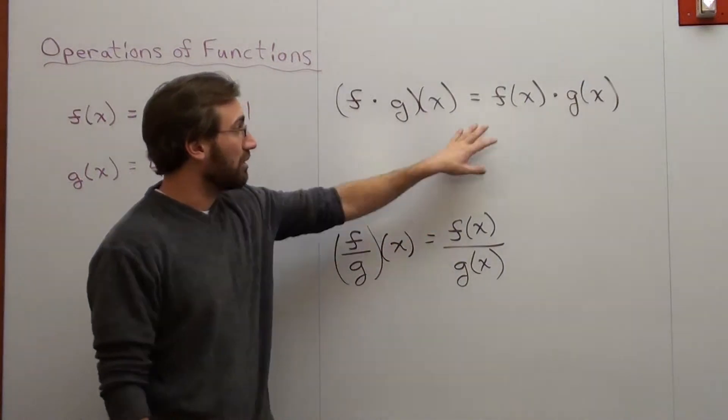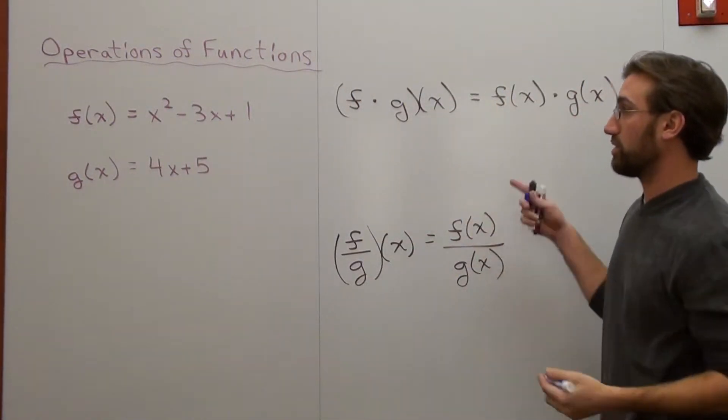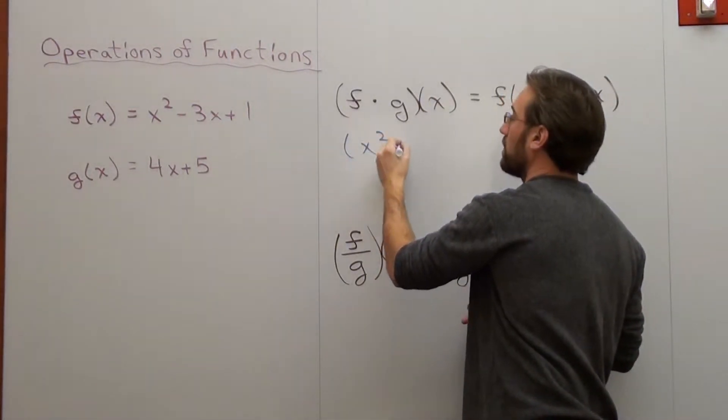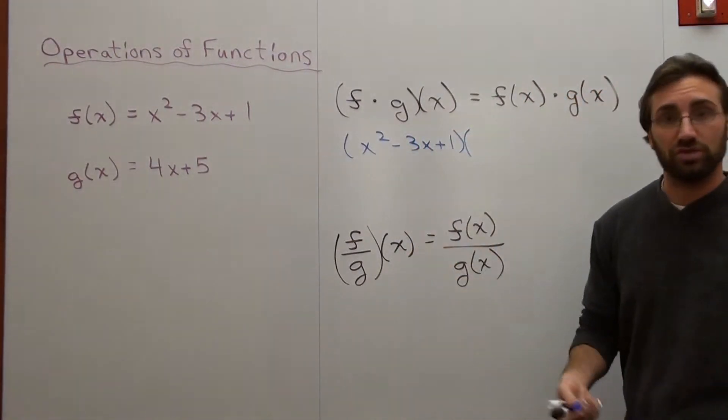We're going to go ahead and multiply two functions together. My f of x is x squared minus 3x plus 1. So I'm going to do that first, times my g of x which is 4x plus 5.